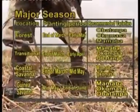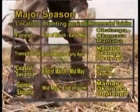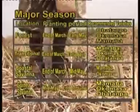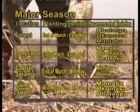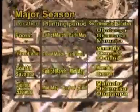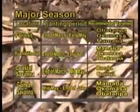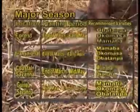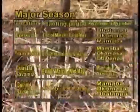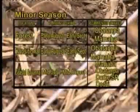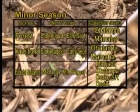In the coastal savannah, the planting period is between end of March to mid-May, and the recommended varieties are Mamaba and Okomasa. In the Guinea savannah agroecological zone, the planting period is between mid-May to end of June, and the recommended varieties are Mamaba, Okomasa, and Obatampa.